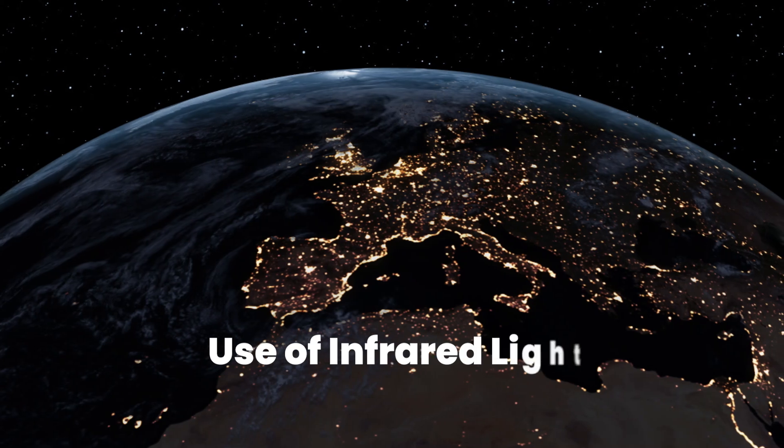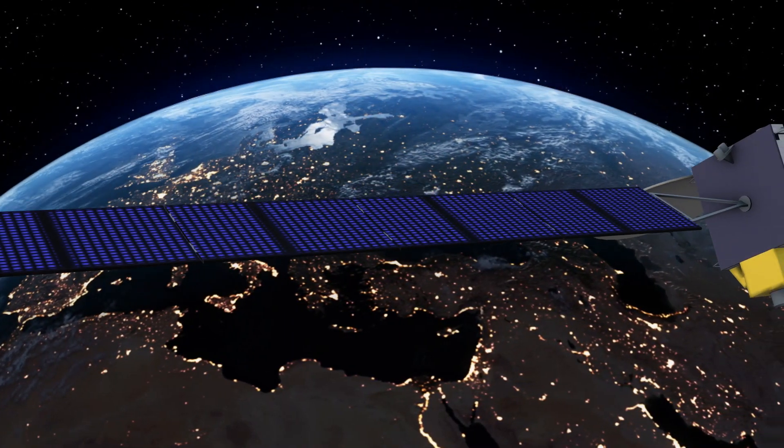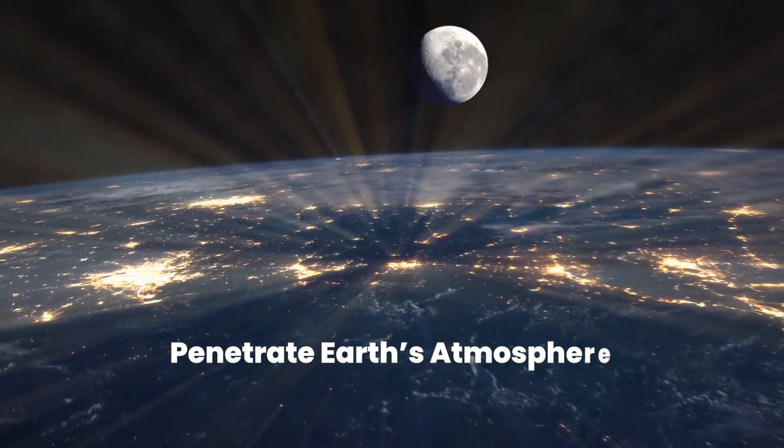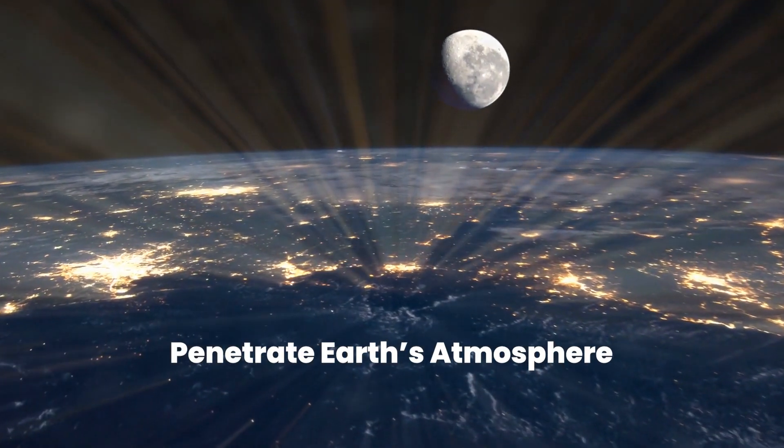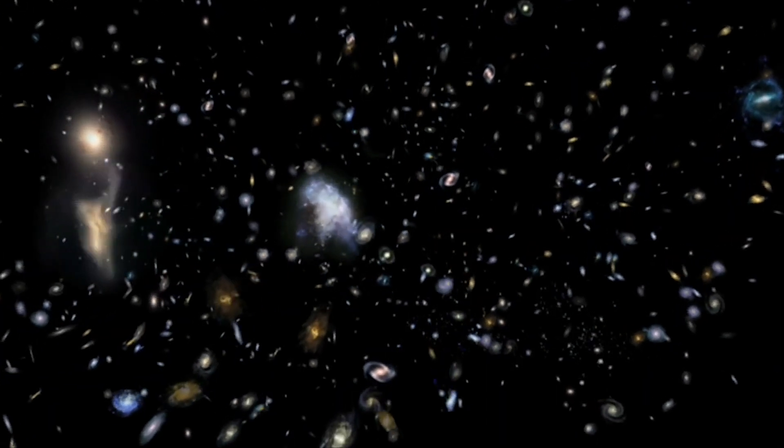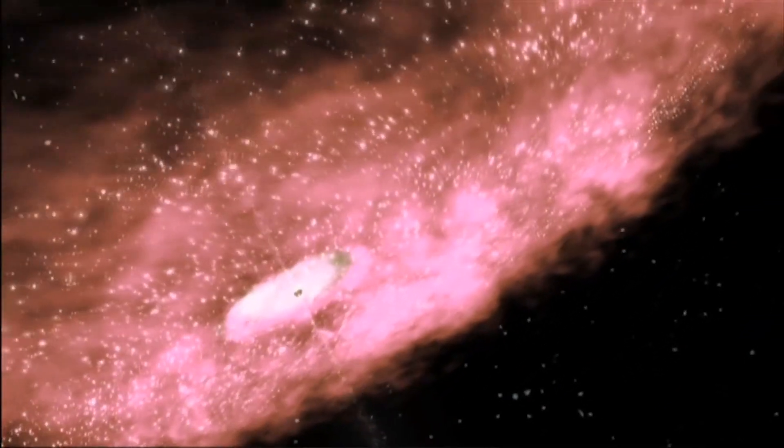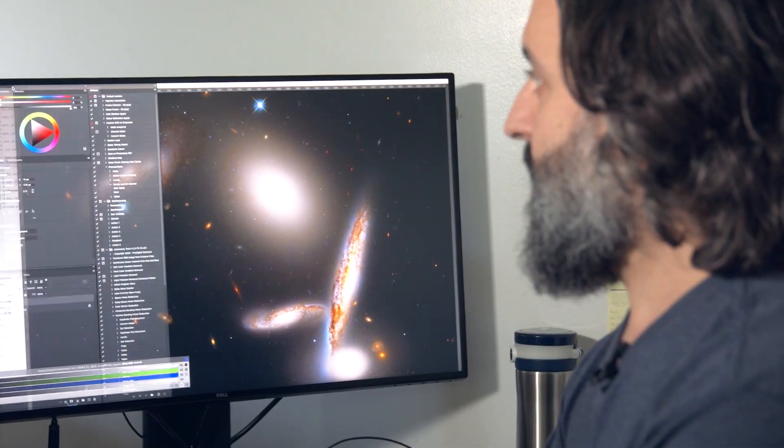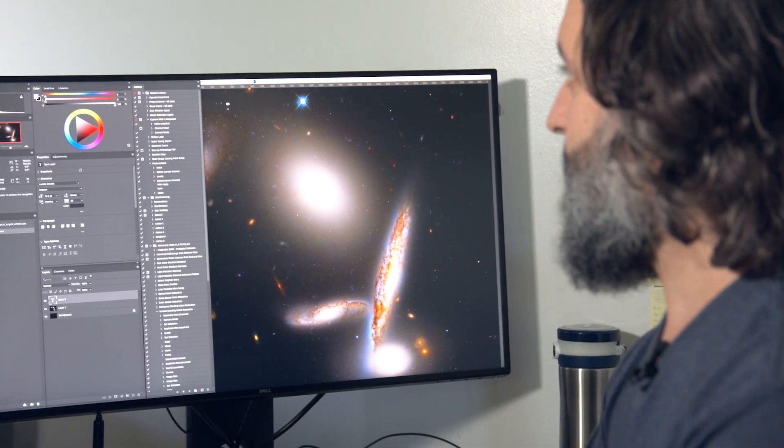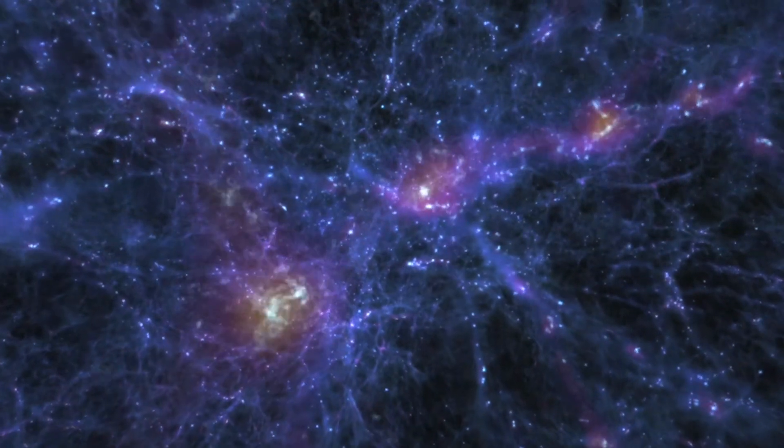Now you might wonder why infrared light? NASA chose infrared for its ability to penetrate Earth's atmosphere, which predominantly blocks it. As the universe expands, light from distant sources undergoes redshift, shifting towards the red end of the spectrum. By observing this redshifted light we can peer back in time, witnessing the early universe's formation, birth of stars, and the evolution of galaxies.